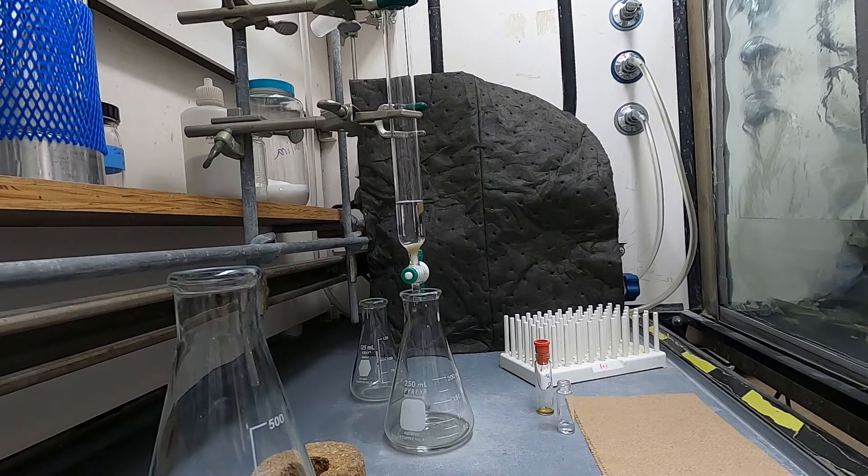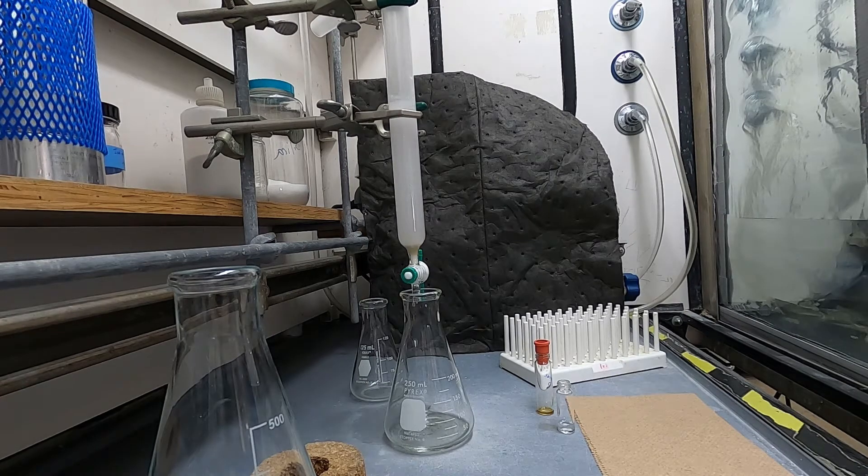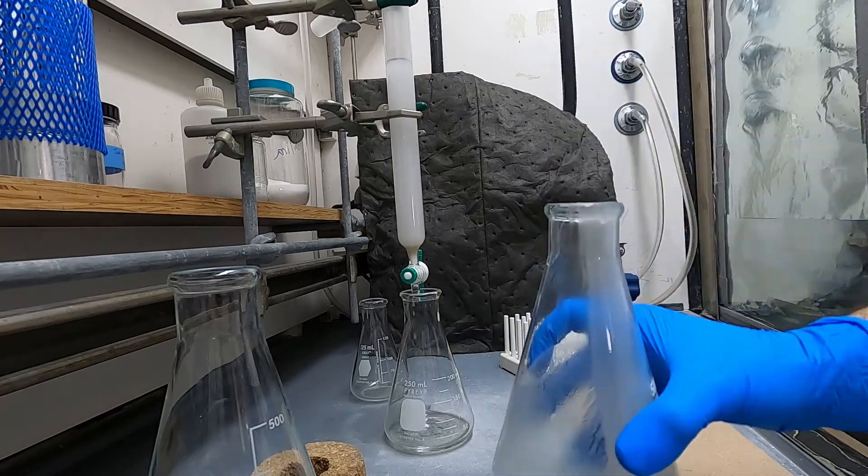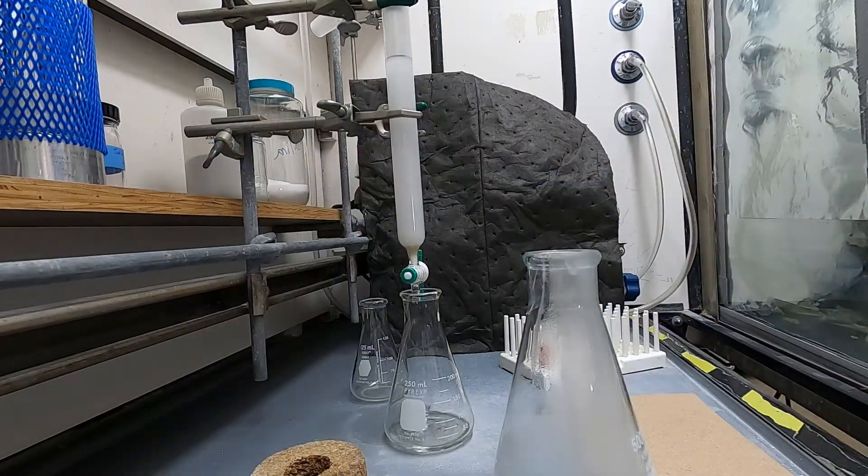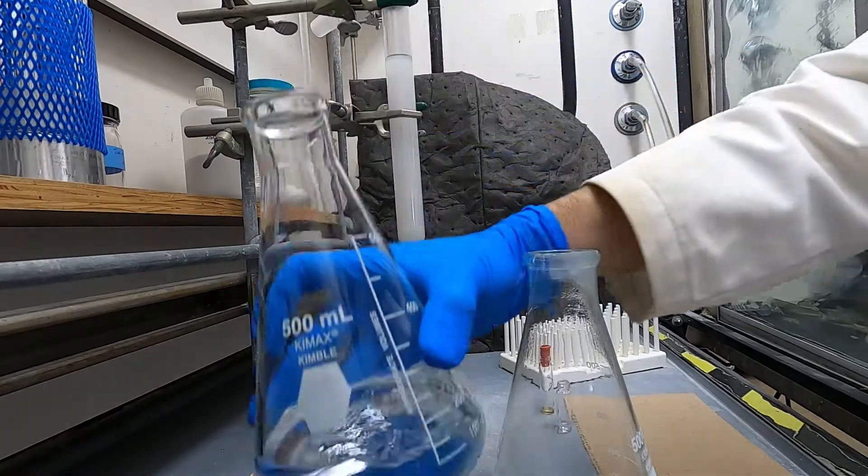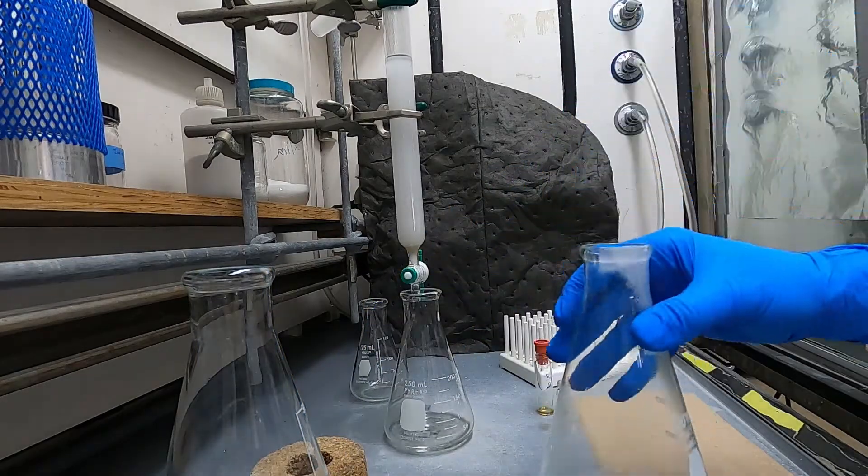I added it a little bit quickly here but you can see that it didn't really disturb the sand layer because we had so much solvent above that so overall that's pretty good. And then I'll just do a couple more rinses to transfer all of the silica to the top of the column.